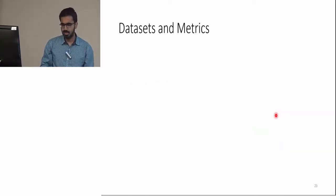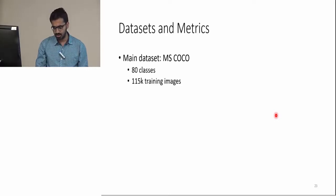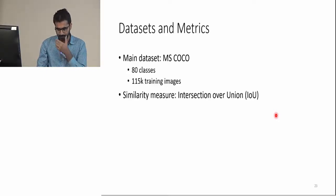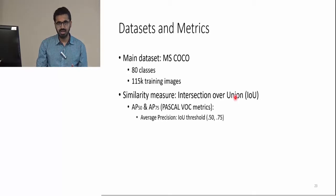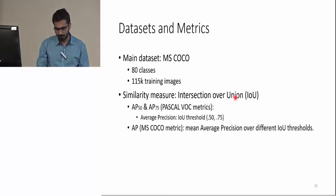The main dataset that they use in their experiments is MS COCO dataset. It contains 80 classes and 115,000 training images. The evaluation metrics that they use for comparing bounding boxes and segmentation masks is based on intersection over union. They use PASCAL VOC metrics of AP50 and AP75, which are average precision at 50% and 75% IoU threshold. They also use MS COCO metric of mean of the average precision at different IoU values.